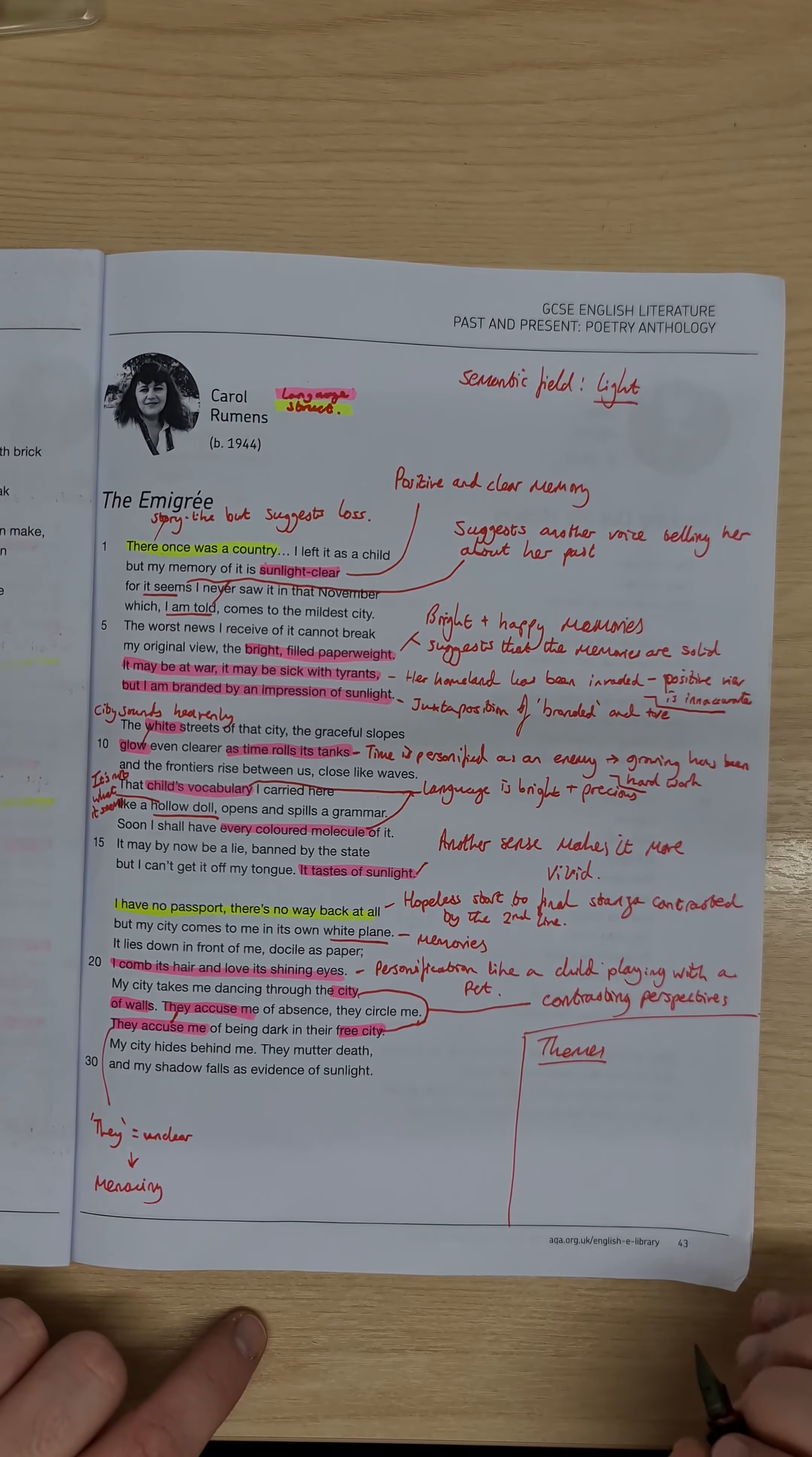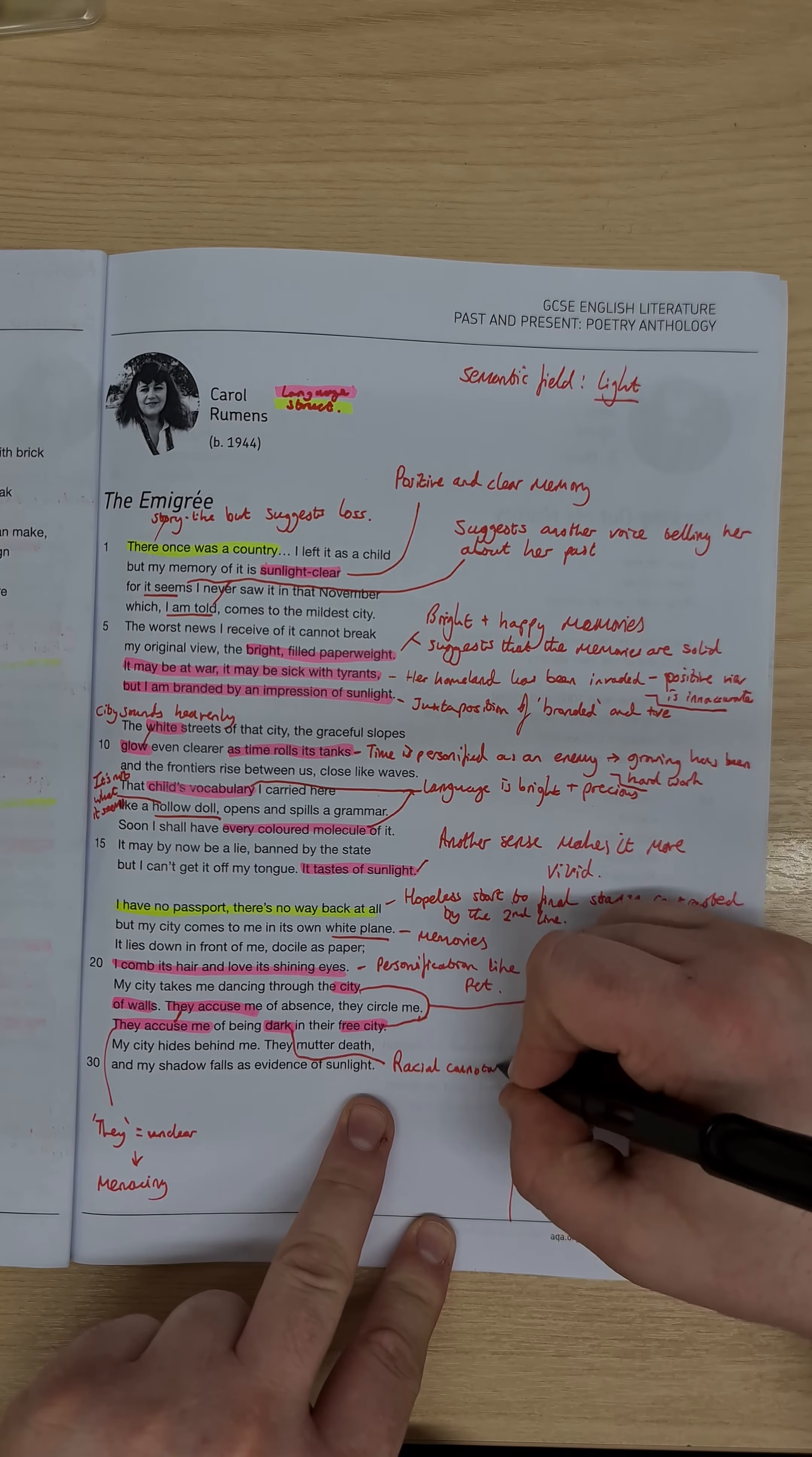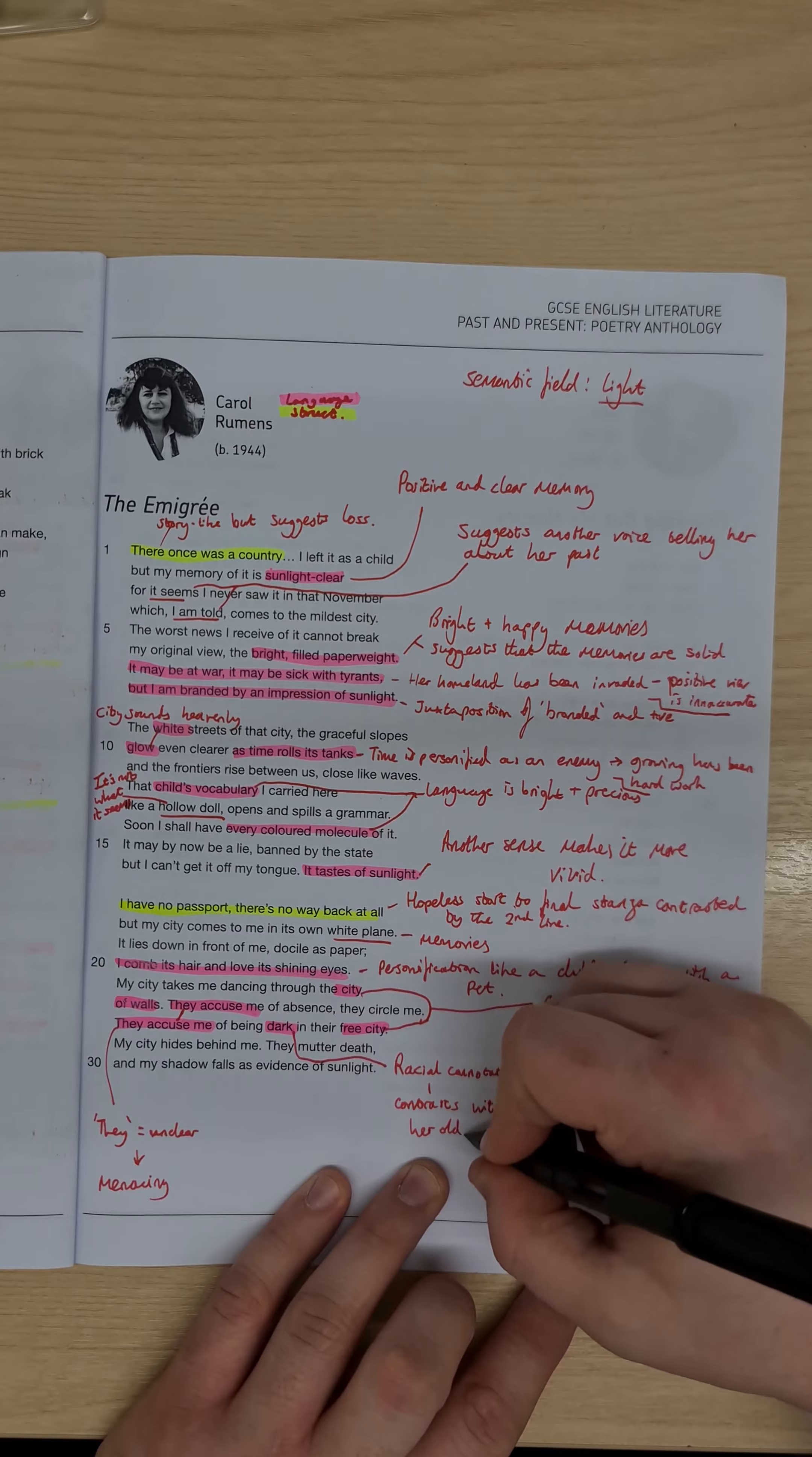and my city hides behind me, so that's suggesting that her truth hides behind her, this idea of dark, they accuse me of being dark, now she, you could argue in one way, that she means they accuse me of being evil, there is the racist connotations of this as well, so we have racial connotations here, we also have the suggestions here that it contrasts with, again we have this sort of contrasts with her old city, remember the vocabulary we had used earlier on to describe a city of the white streets that glow, contrasts with her old city,